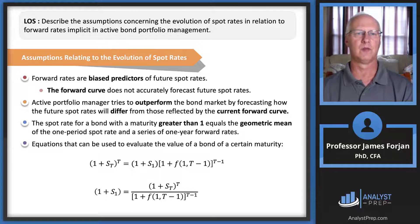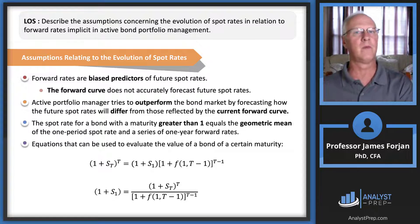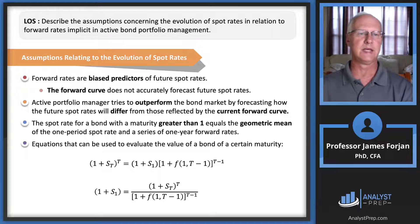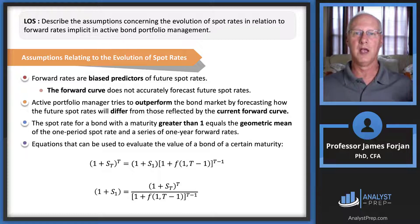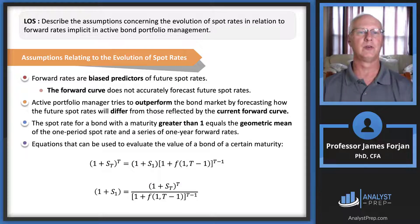There are four key assumptions concerning the evolution of spot rates relative to forward rates. First, forward rates are biased predictors of future spot rates — somewhat different from what we discuss in equity readings. Specifically, the forward curve does not accurately forecast future spot rates. We can compute these forward rates and use them to price future borrowings and lendings, but they are not particularly helpful for predicting future spot rates.